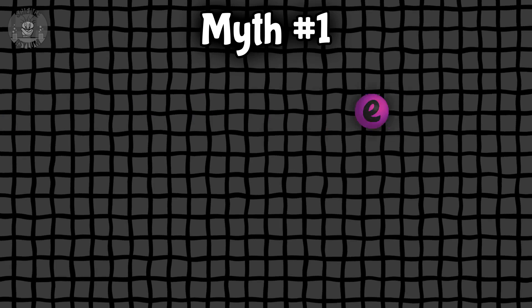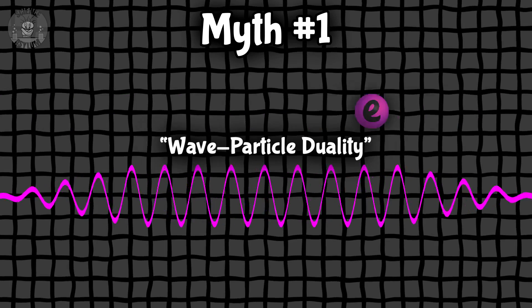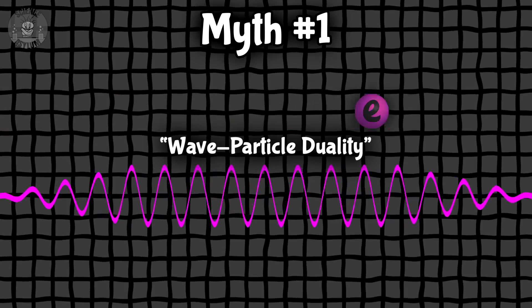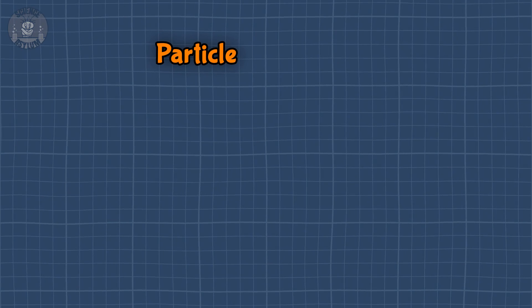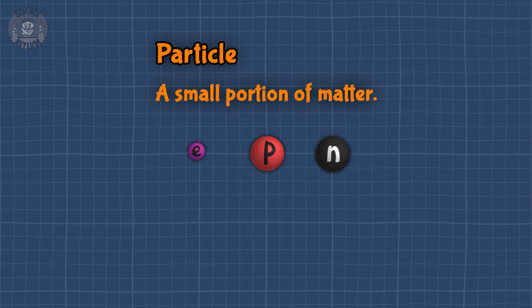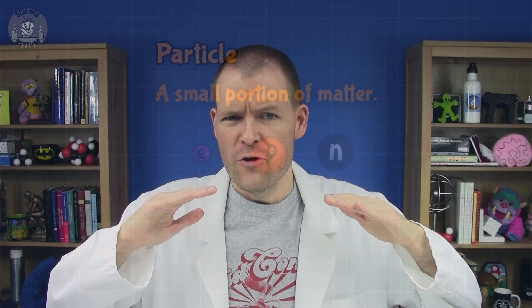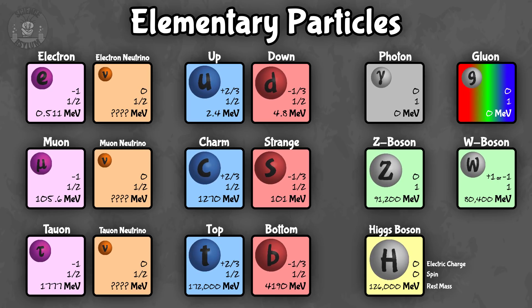Myth number one: sometimes electrons behave like particles, sometimes they behave like waves — it's called wave-particle duality. False! We have to be careful with the word 'particle.' A particle is vaguely defined as a small portion of matter, which is always true for things like electrons, protons, and neutrons. No matter what their behavior, they are always small portions of matter — so they are always particles. That's why we call all of these things elementary particles.